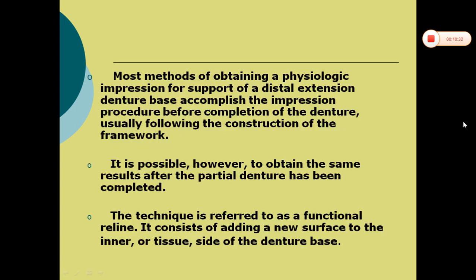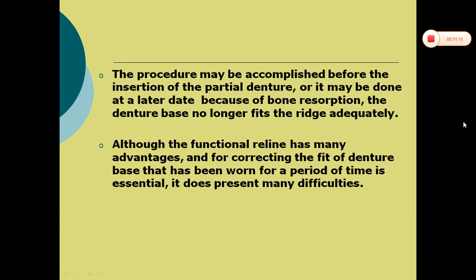Coming to the functional relining method. Most methods of obtaining a physiologic impression for support of a distal extension denture base accomplish the impression procedure before completion of the denture, usually following the construction of the framework. It is possible, however, to obtain the same results after the partial denture has been completed — this technique is referred to as functional relining. It consists of adding a new surface to the inner or tissue side of the denture base. The procedure may be accomplished before insertion of the partial denture or at a later date because of bone resorption, when the denture base no longer fits the ridge adequately.